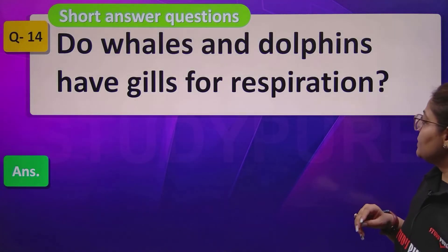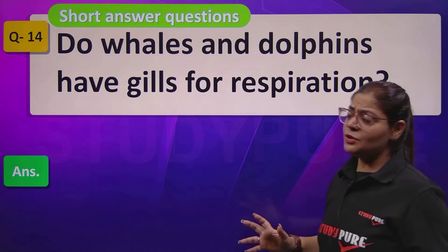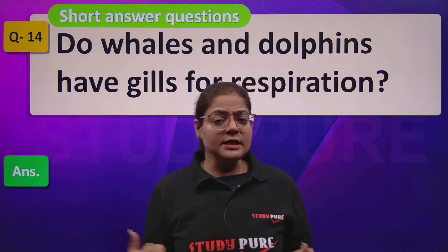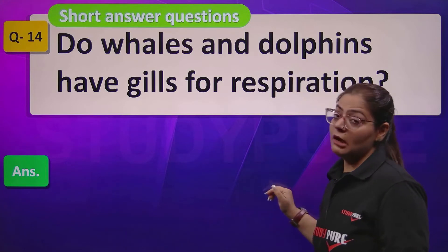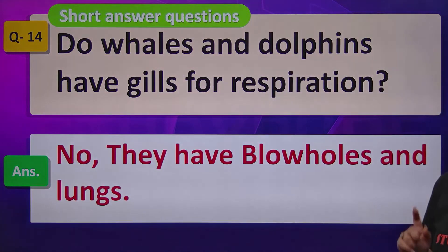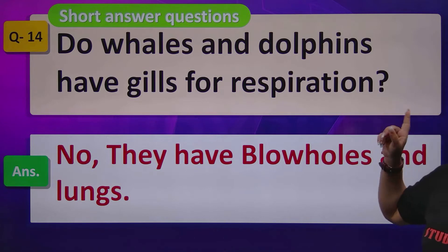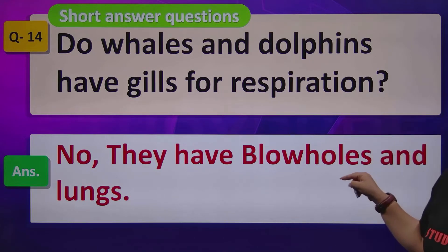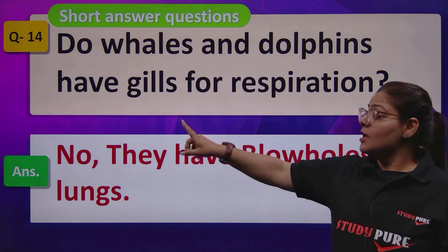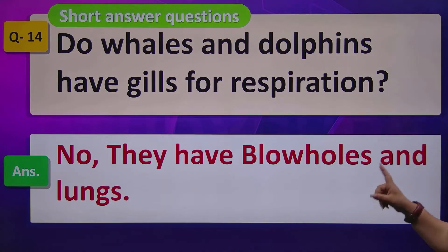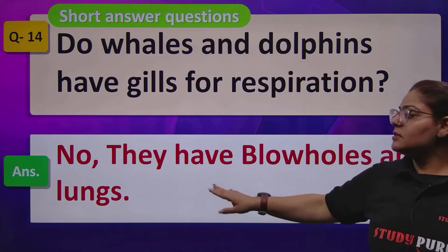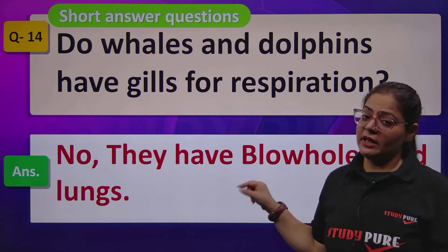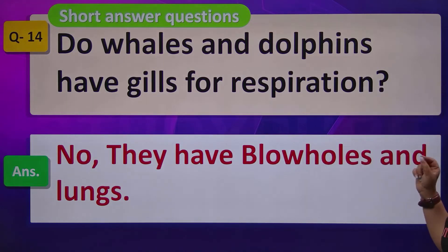Do whales and dolphins have gills for respiration? There are many exceptions in science. Dolphins and whales are one such exception — although they are aquatic animals, they do not use gills. They have blowholes and lungs for breathing. So respiration in dolphins and whales is not through gills. Please make a note — it is very important, even though they are aquatic animals.